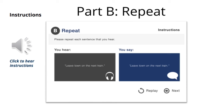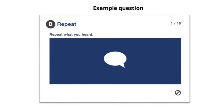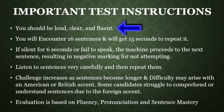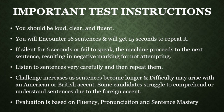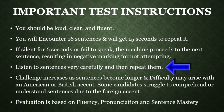Let's move on to our next section, Part B: Repeat. In this section you will hear an automated voice that will speak a sentence to you and you must repeat it exactly as you hear it. This section is all about listening and repeating sentences. For example, the machine will say 'leave town on the next train' and you must respond by repeating 'leave town on the next train.' Be loud, clear, and fluent. You will encounter a total of 16 sentences and for each sentence you will have 15 seconds to repeat it. However, if you remain silent for 6 seconds or fail to speak at all, the machine will proceed to the next sentence automatically and you will get a negative mark for not attempting the sentence.